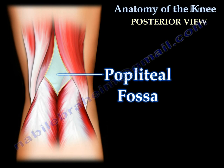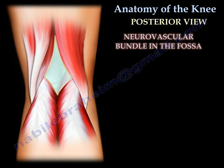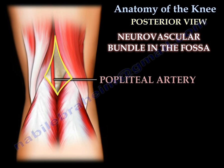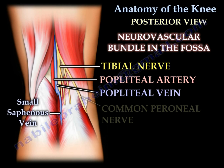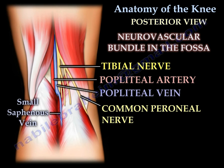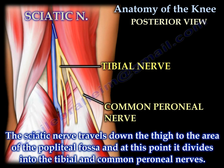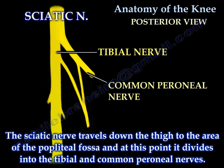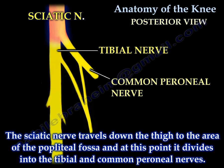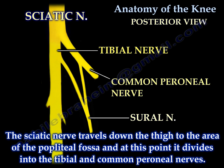The popliteal fossa is seen here at the back of the knee. There are neurovascular bundles within the fossa. You can see the popliteal artery and vein, the tibial nerve, and the common peroneal nerve. Both the tibial and common peroneal nerves arise from the sciatic nerve. Here you can see a diagram of the sciatic nerve and its branches.